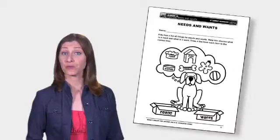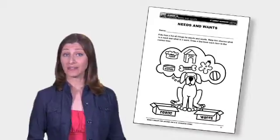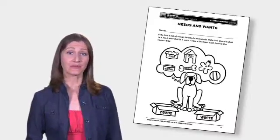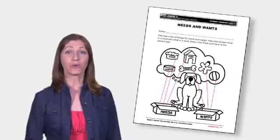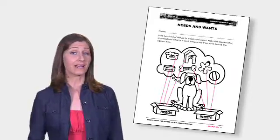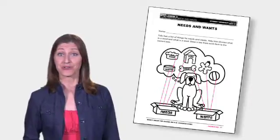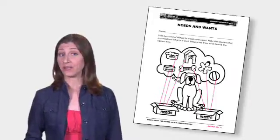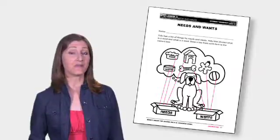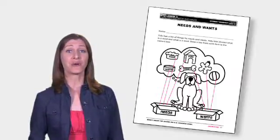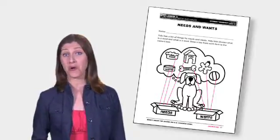After discussing the story, have students practice sorting needs by completing the needs and wants handout. For pre-K and kindergarten students, ask them to work as a group to match each item to needs or wants, and then have them color the activity sheet. For students in grades 1 and 2, extend the activity sheet by asking them to number the three wants that are pictured in order of their own ranking.